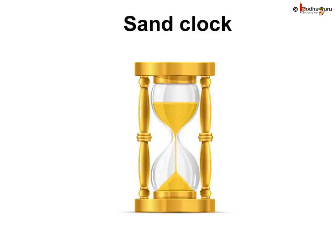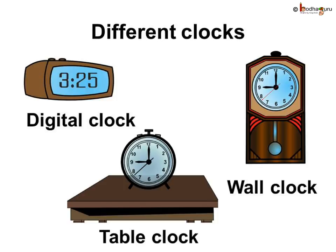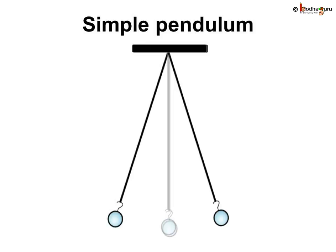We have different types of clocks to know the time with greater precision now. The working of clocks is rather complex, but all of them make use of some kind of periodic motion.